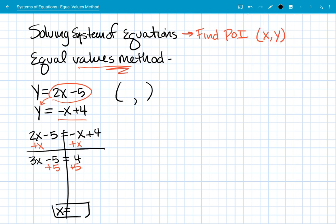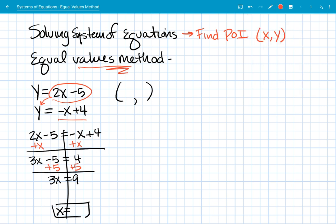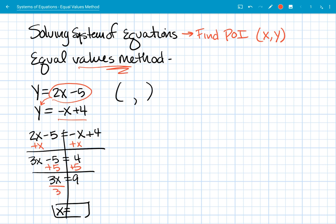And that gets me that 3x equals 9. And so if we divide, that tells us that the x value of the point of intersection is 3.